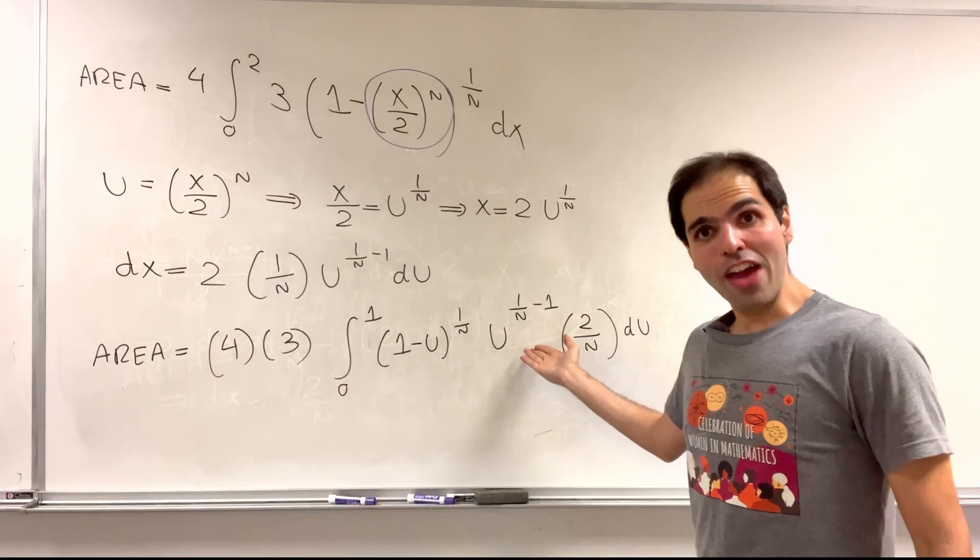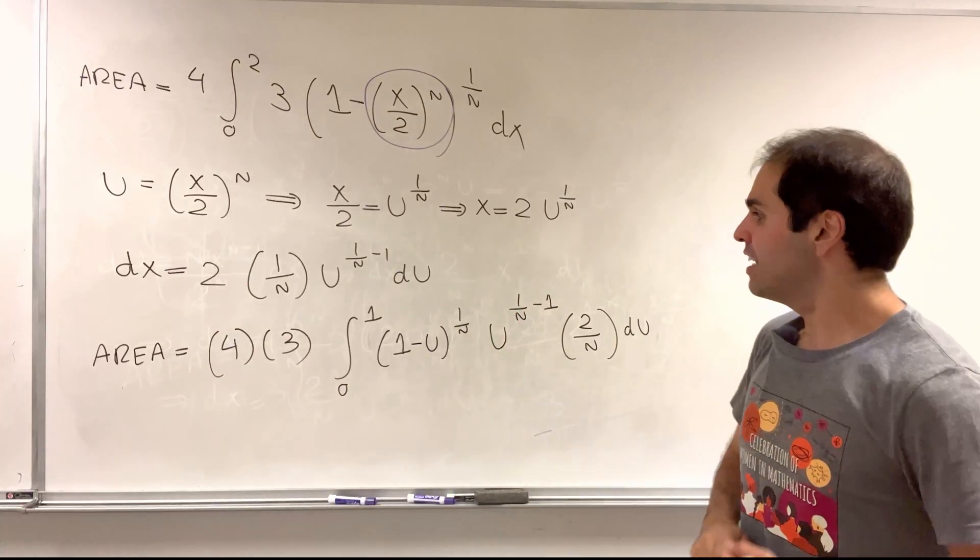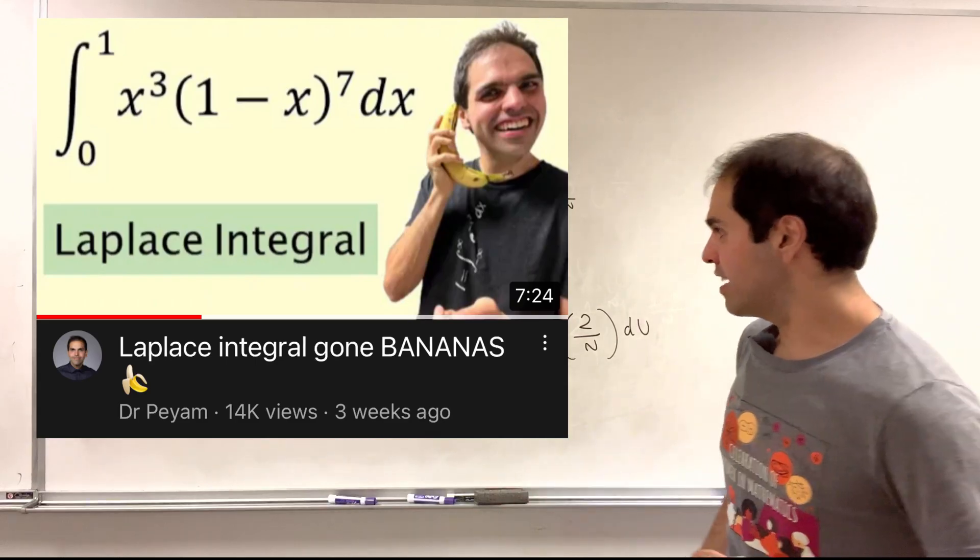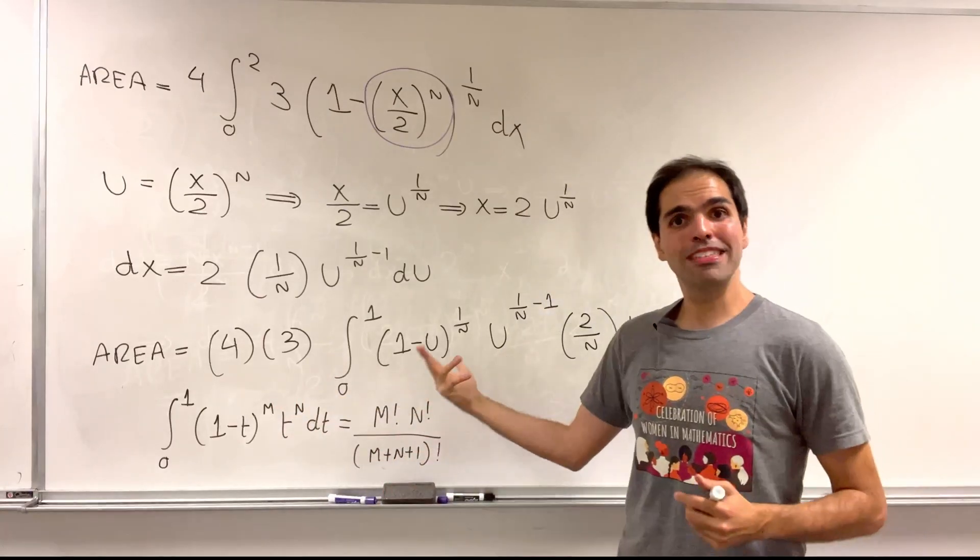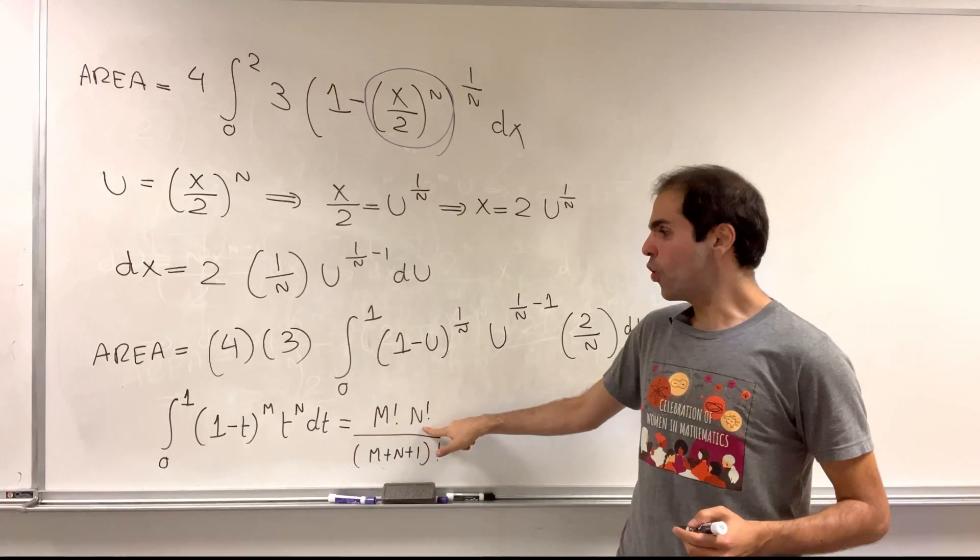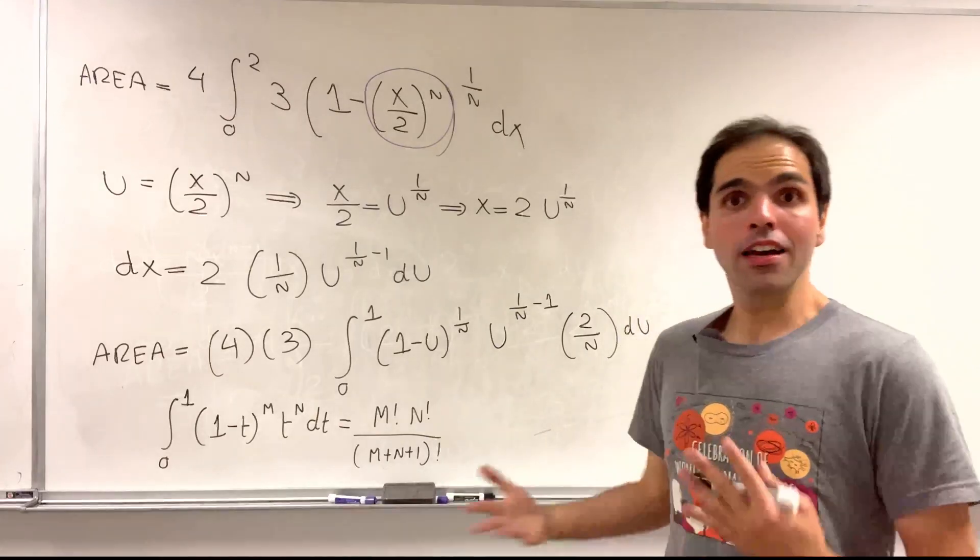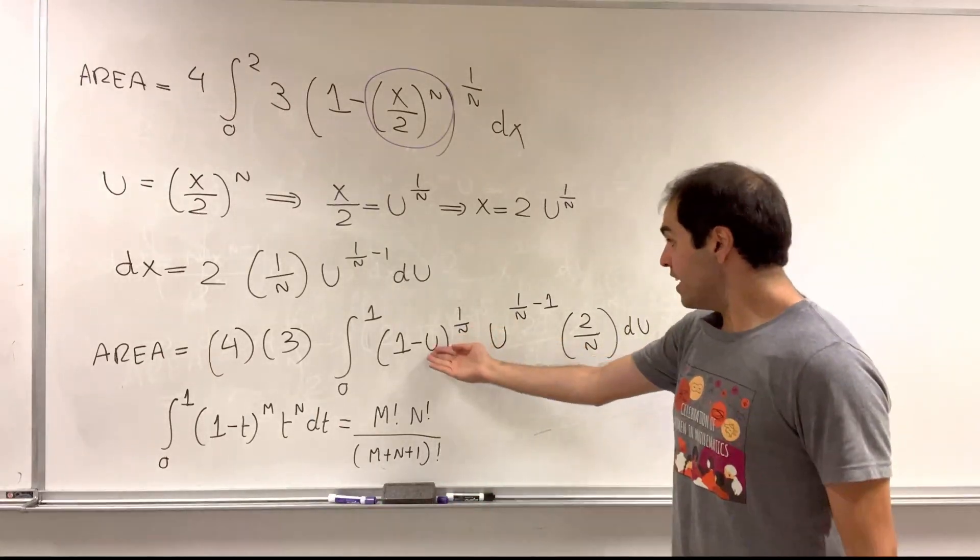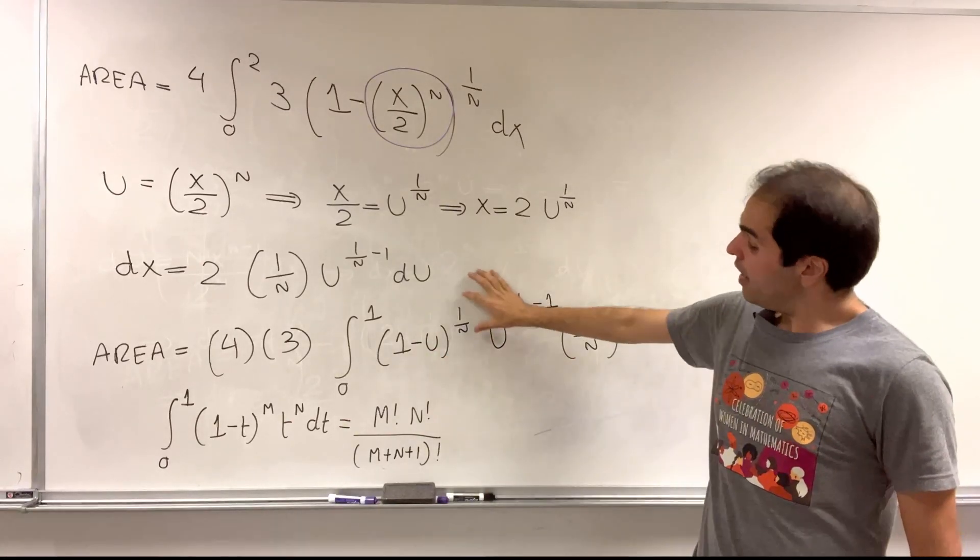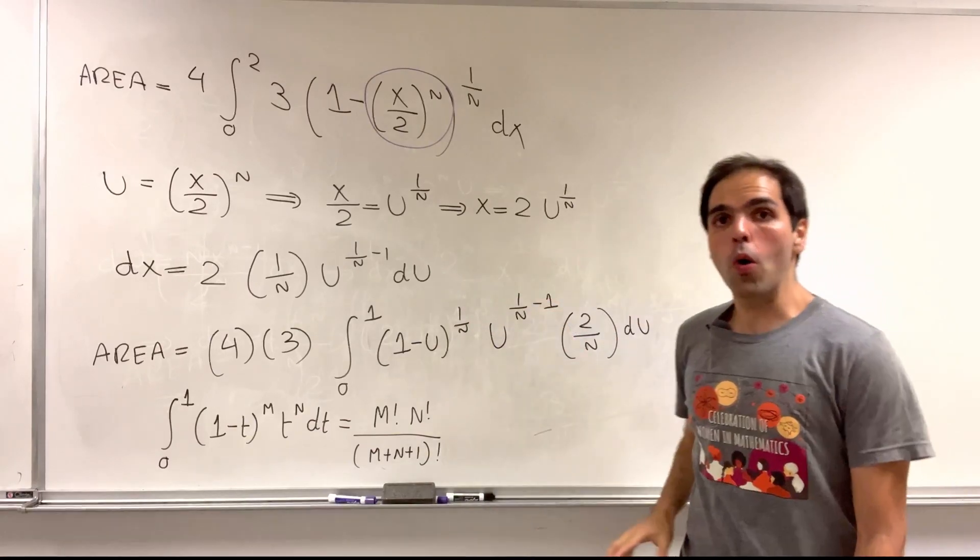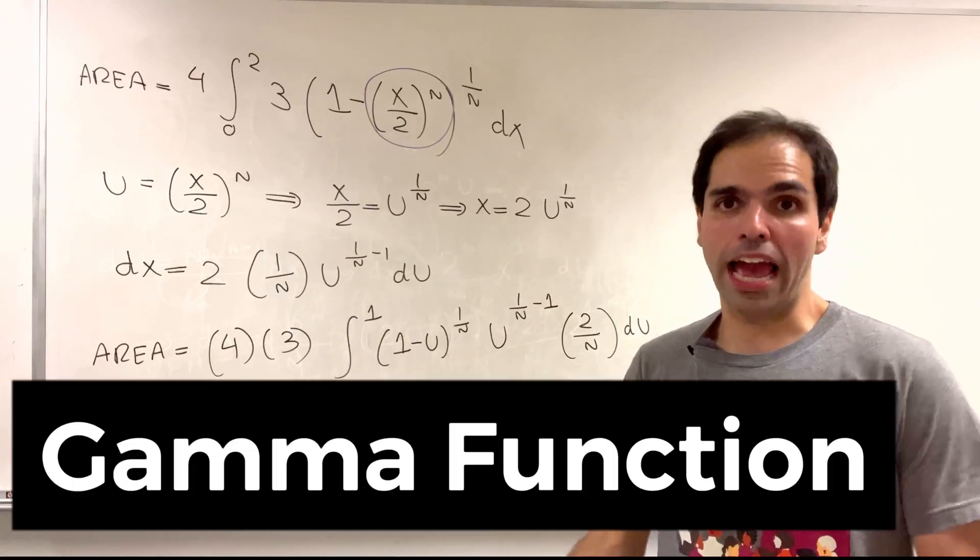Now although this looks very complicated, I have done an integral of this form in another video and the result was as follows. If you calculate the integral of 1 minus t to the m times t to the n, it's just m factorial times n factorial over n plus m plus 1 factorial. And indeed here it is of the same form except we're using u instead of t. The only difference is here the exponents are fractional, so instead of using factorial you have to use what's called the gamma function.